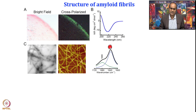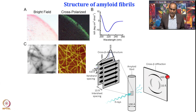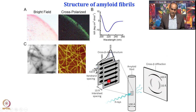In FTIR, amide-I stretching shows a wave number of around 1635 cm⁻¹, which corresponds to beta-strand or beta-sheet structure. All of these confirm they look like rope-like or fiber-like structures, can be stained with a specific dye, and have a beta-sheet structure. You cannot do crystallography, but you can do fiber diffraction and get two characteristic reflections: one at 4.8 Å and another at about 10 Å. This reflection pattern suggests a cross-beta structure, with inter-sheet spacing ~10 Å and inter-strand spacing ~4.8 Å.